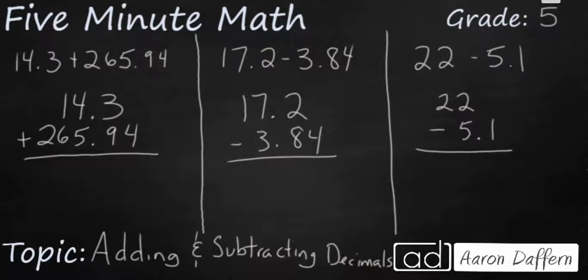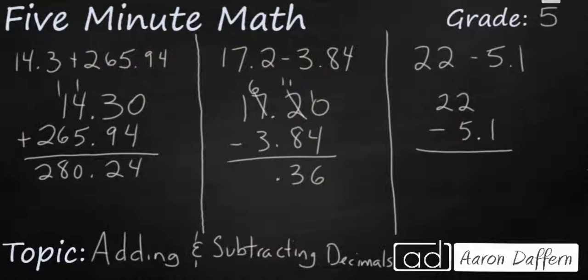The key to all three of these is to line up the decimals. If you want you can put a zero in the hundredths place in the top there. We're going to go ahead and make this 280 and 24 hundredths. Let's put a zero in the hundredths place there so we can do some regrouping here. So that's going to be 6. We need to regroup from this. Make that an 11. Bring your decimal down and then 22. Let's make it 22.0 so we can go ahead and regroup here. That's going to be 9. Bring down your decimal, 16.9.